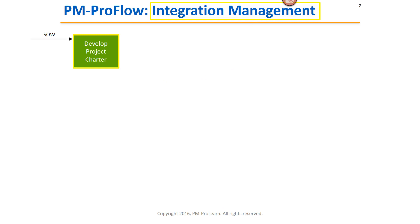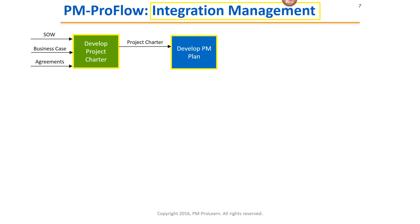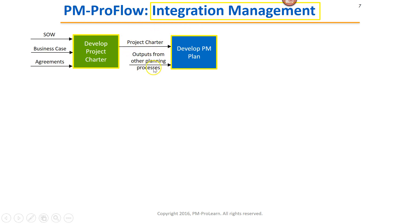To develop the project charter, we need a statement of work, a business case, and any existing agreements. The output of Develop Project Charter is a project charter — that's the main document — and that's an input to the next process called Develop PM Plan. Notice it is also highlighted, as it's part of the integration management knowledge area. We also need outputs from other planning processes as input to Develop PM Plan — we'll get into that in class. The output of Develop PM Plan is the project management plan.